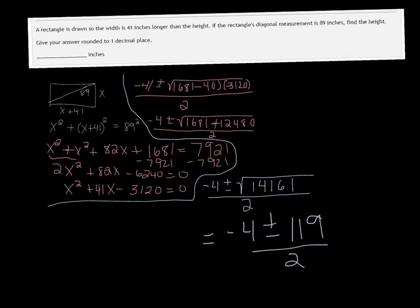Alright, so, from there, if we take negative 4 and we add 119, we'll get 115 over 2. And if we subtract it, we'll get negative 123 over 2.